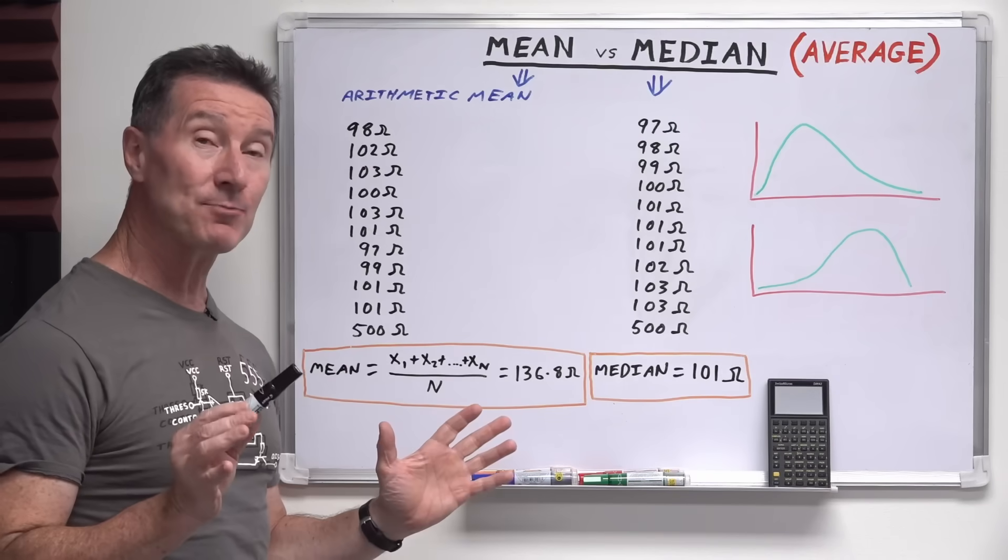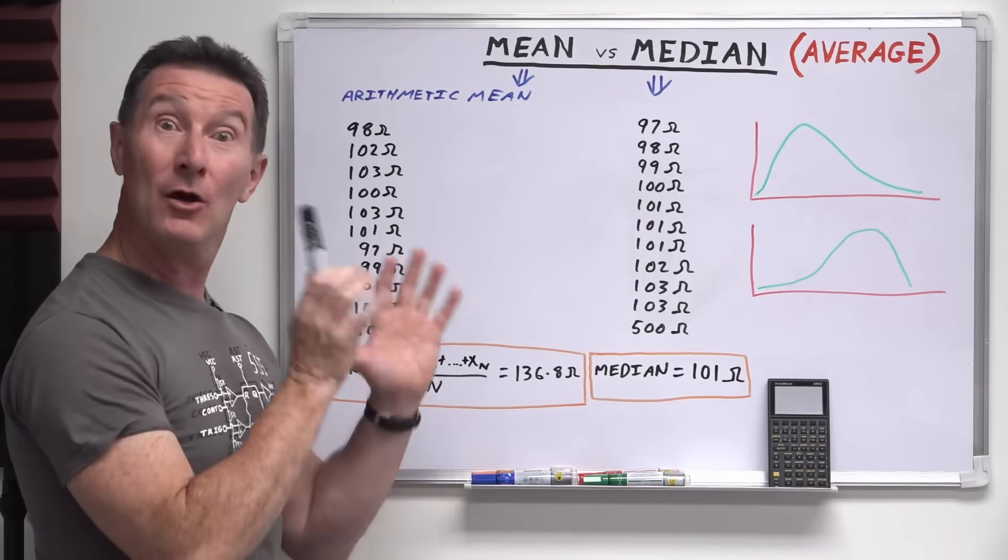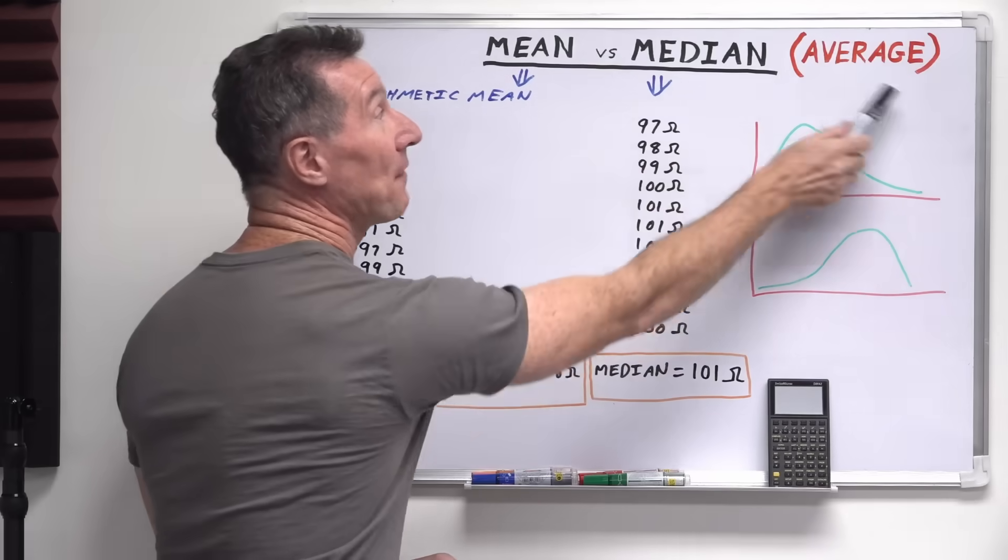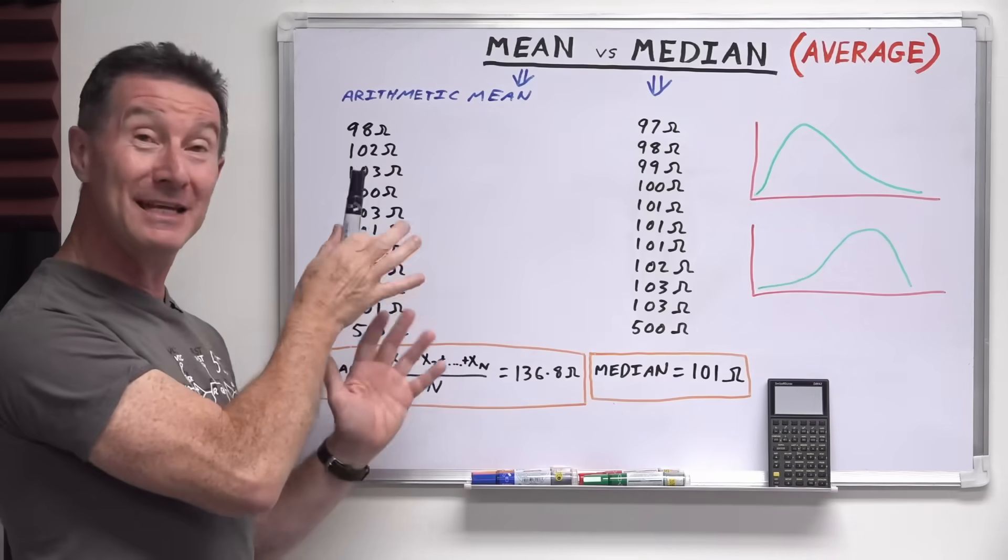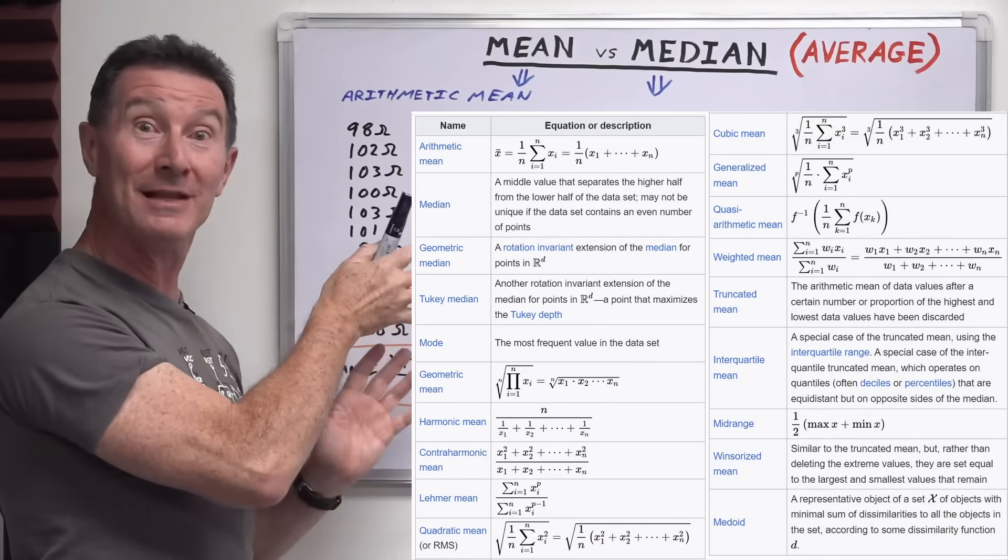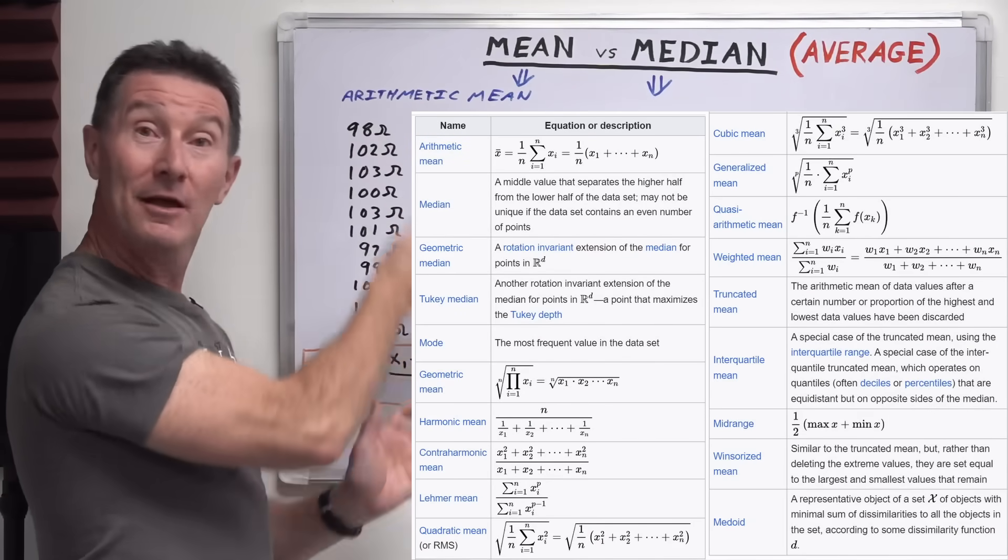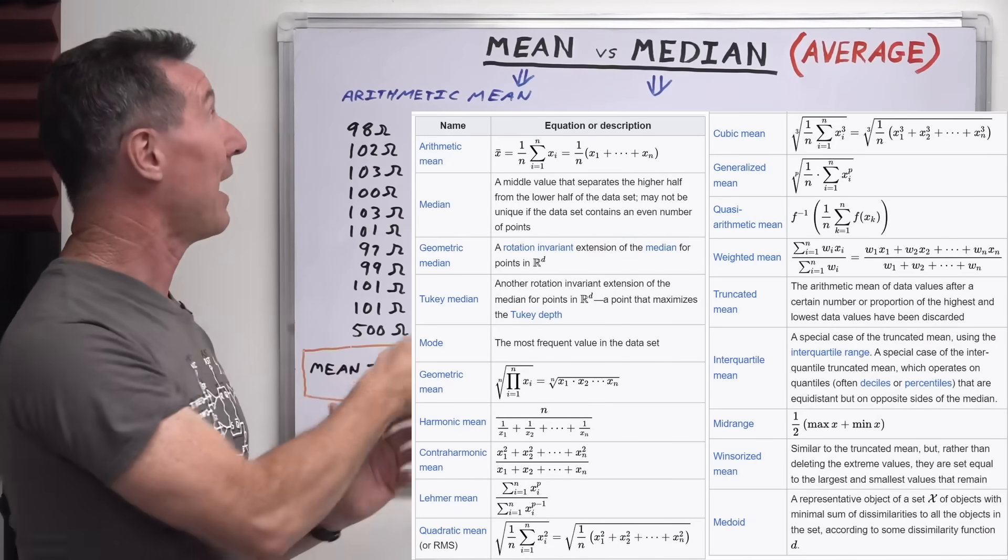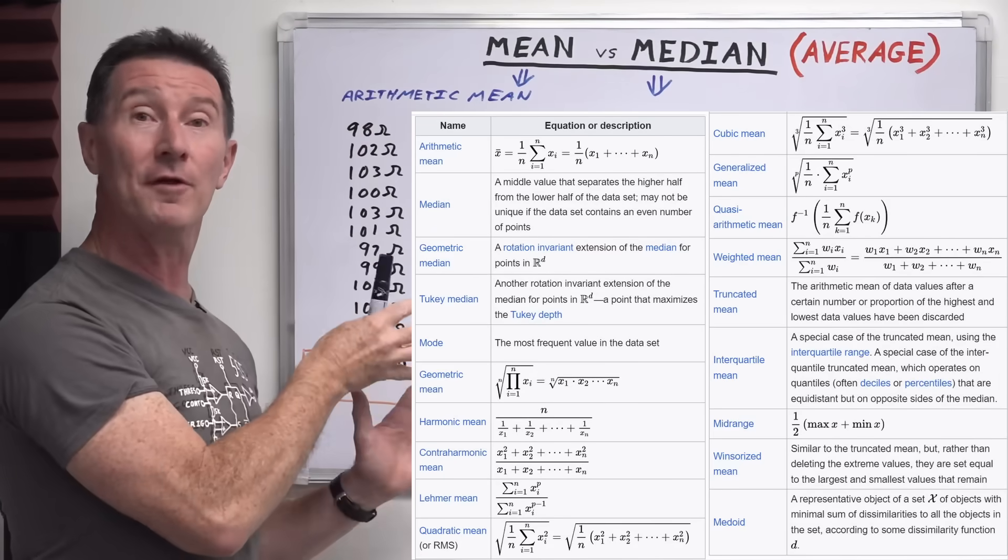So how do we get around these problems? Well, we use what's called the median. Once again, median is just another type of average. And there's actually many different types of averages here. I'll put up a list and you might have to zoom in on this one. There's a ton of different type of averages.